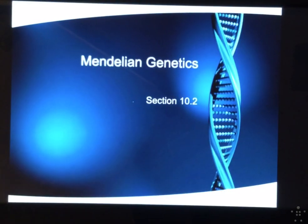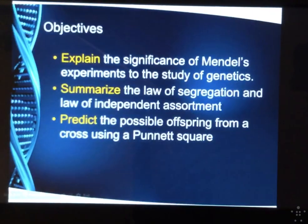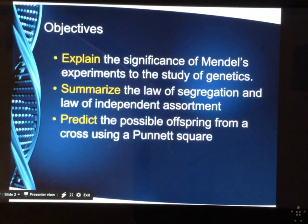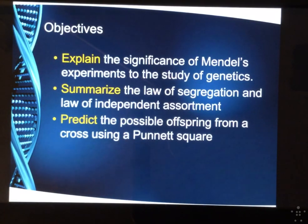Alright, so today we're going to continue on with the Mendelian genetics. I'm just going to recap some of the things that we went over yesterday, just so you can have a taste of what we talked about. Bear with me for this, and then we'll get to the new stuff, and I'll slow down a little bit. Our objectives are to explain the significance of Mendel's experiments to the study of genetics, laying the foundation of genetics as we know it today. Then summarize the law of segregation and the law of independent assortment. Predict the possible offspring from a cross using a Punnett square, which you guys have already done.